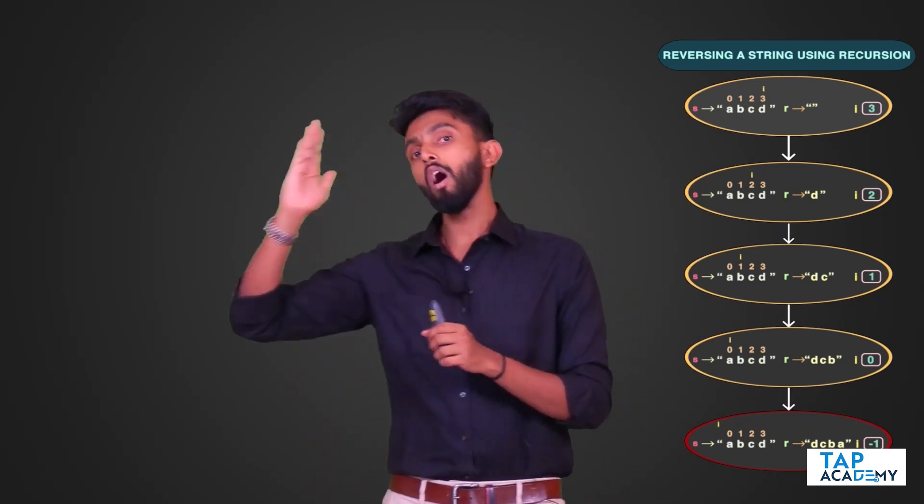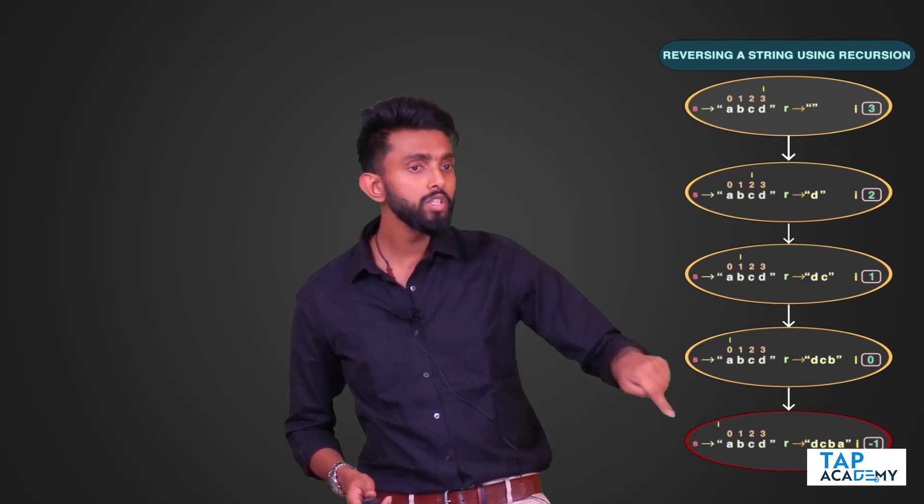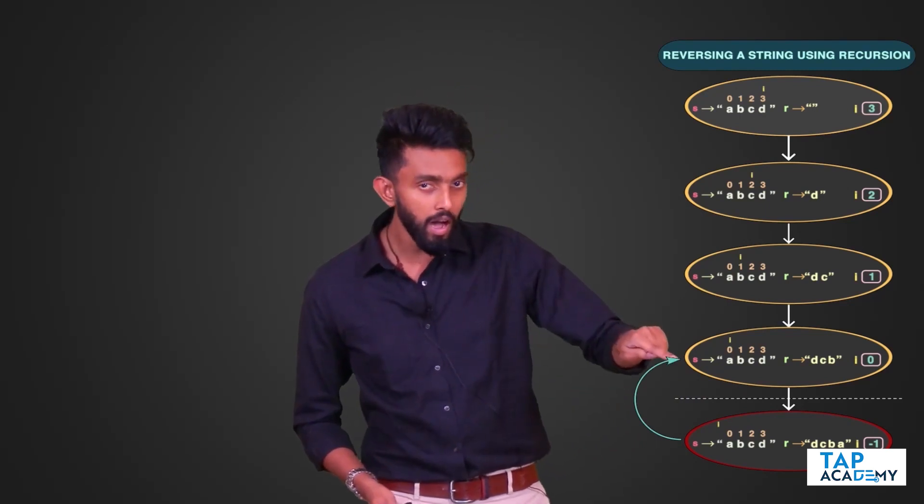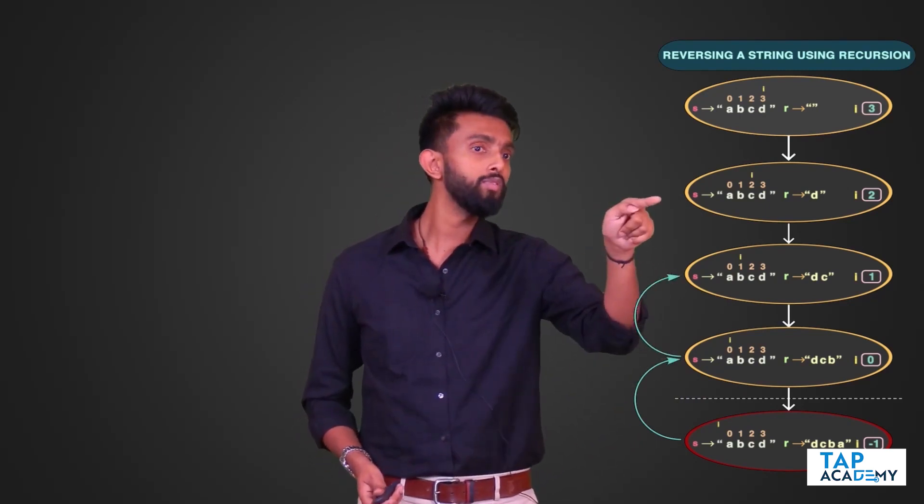The base condition is: the moment `i` goes below the first index (0), meaning when `i` becomes less than 0, we've hit the base case. At that point, `R` holds the complete reverse string, so we return `R`. Each recursive call returns the same `R` back up the call stack, and ultimately the final answer - 'DCBA' - is returned.